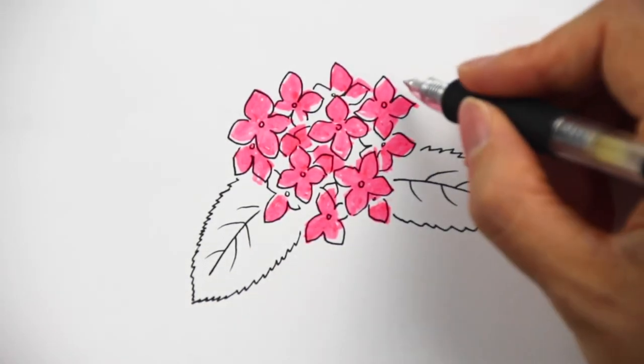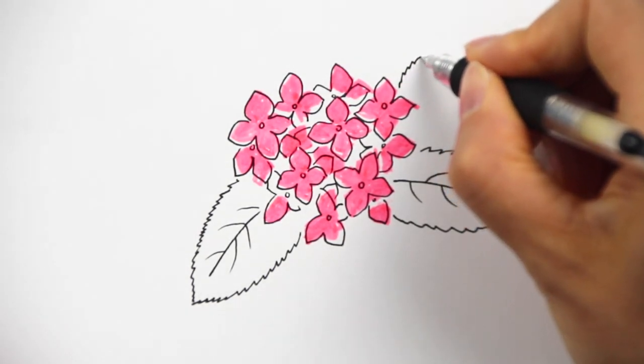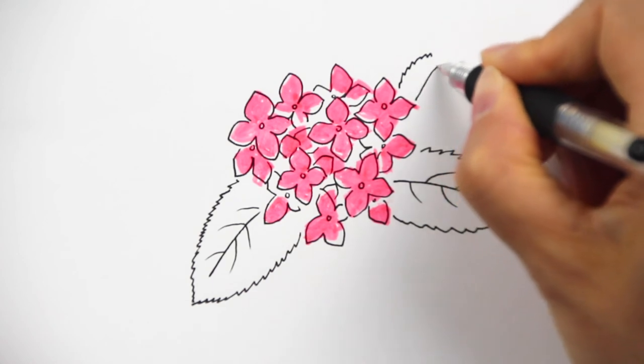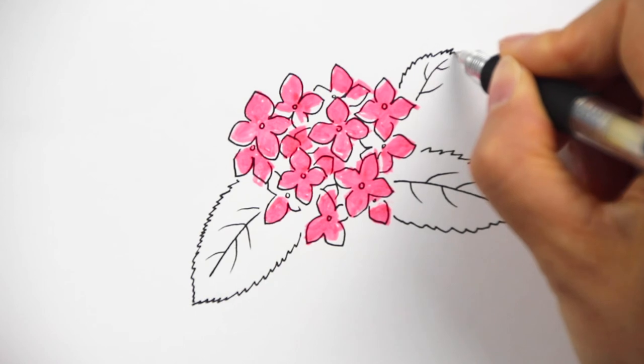Here I'm going to add just a little tiny small leaf. This is how the leaf is going to extend. Do the same, a little wavy line coming all the way down.